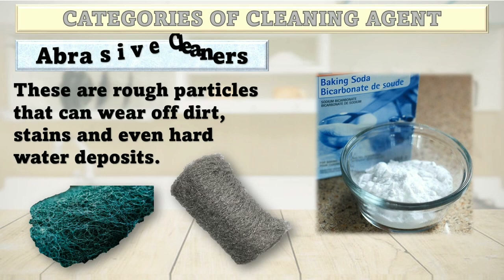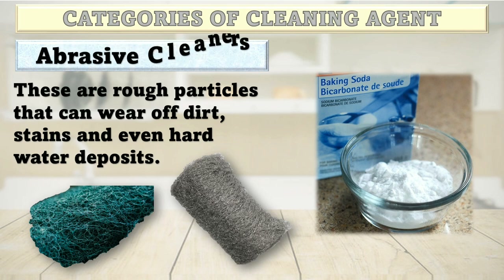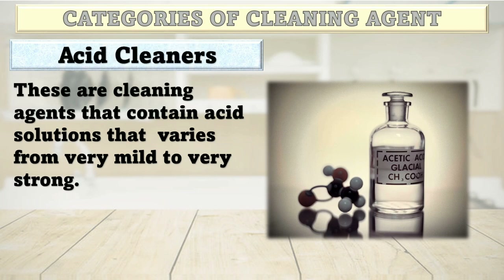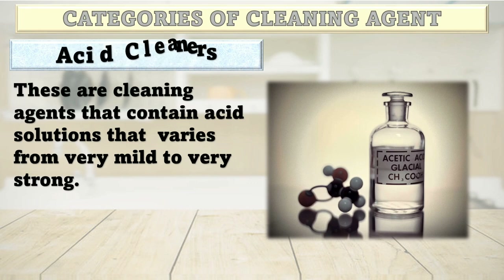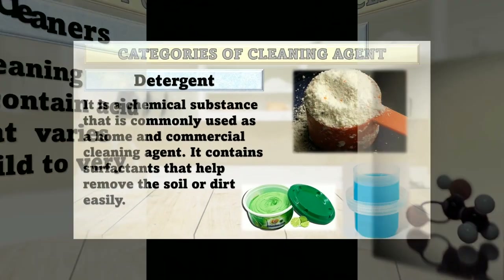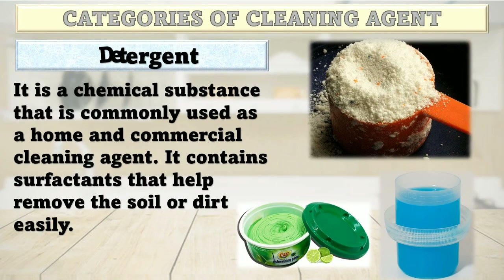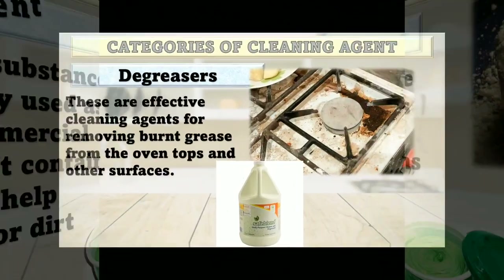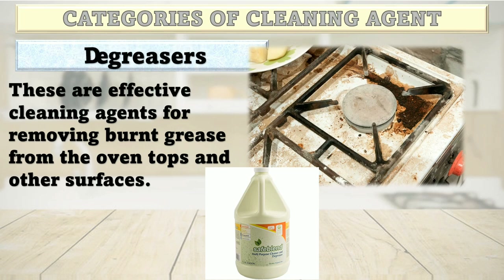Be cautious when using abrasive cleaners because overusing them can leave scratch marks on some surfaces. Acid cleaners are cleaning agents that contain acid solutions that vary from very mild to very strong. Acetic acid is present in clear white vinegar and is considered a natural all-purpose cleaning agent that can remove hard water deposits from glassware and rust stains from sinks. Be careful in using this as it can irritate the eyes and skin. Detergent is a chemical substance commonly used as a home and commercial cleaning agent. It contains surfactants that help remove soil or dirt easily, and it comes in liquid, paste, or powder form. Degreasers are effective cleaning agents for removing burnt grease from oven tops and other surfaces, and are also called solvent cleaners.